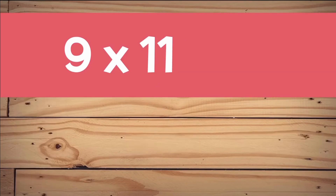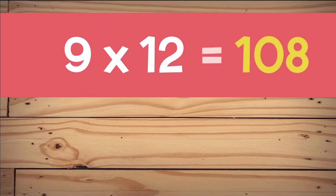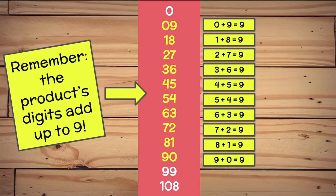The trick doesn't work for 9 times 11, but you know 11 times 9 equals 99, so 9 times 11 also equals 99. 9 times 12: if 9 times 11 equals 99, you can add 9 more and you get 108. Remember the trick — the product's digits add up to 9.